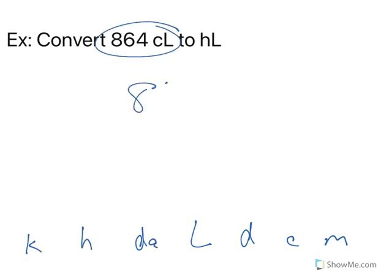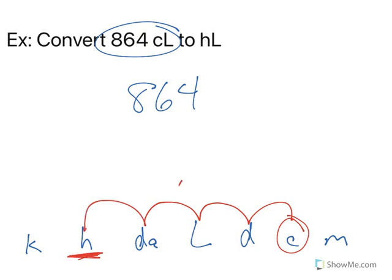Convert 864 centiliters to hectoliters. Okay, so we're talking about liters. And then I have decicentimila, decahecto, kilo. Okay, where am I starting? Starting 864 centiliters. That's here. I want to go to hecta. So that's 1, 2, 3, 4. 4 to the left.